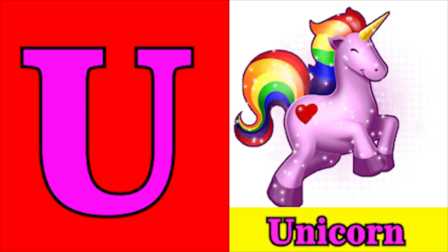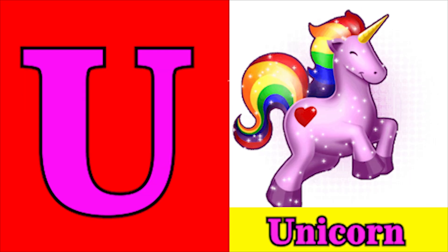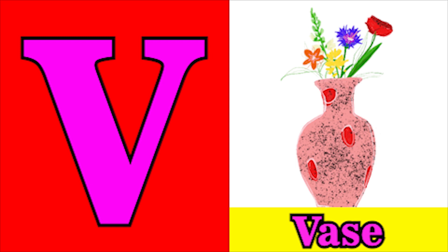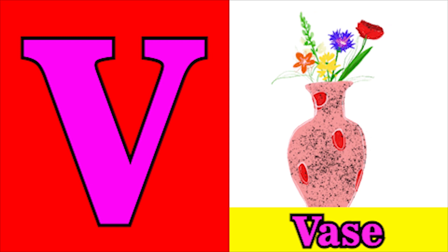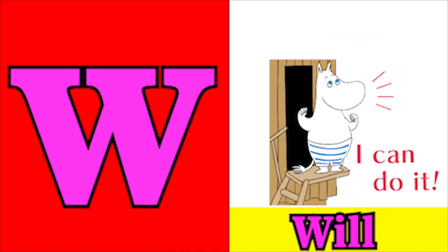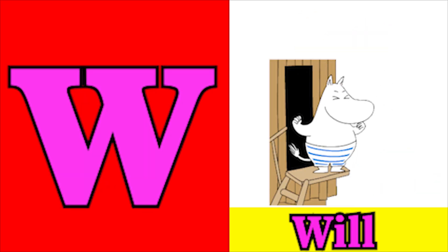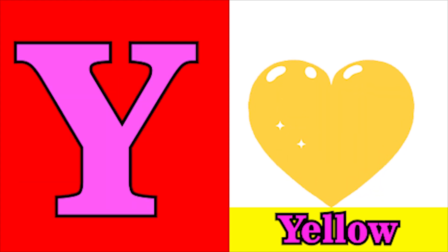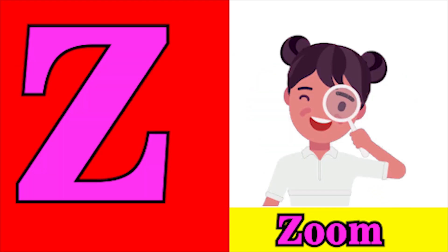U for unicorn, V for wax, W for whale, X for z-rock, Y for yellow, Z for zoo.